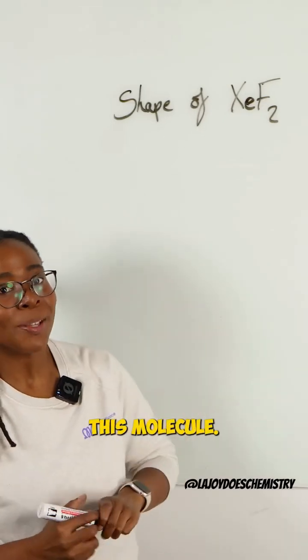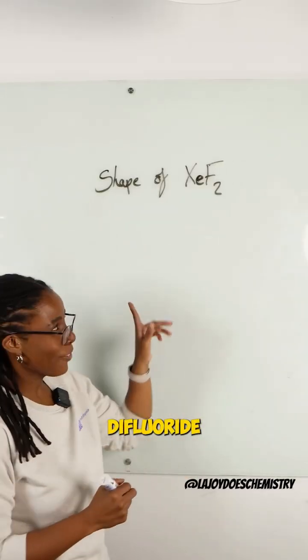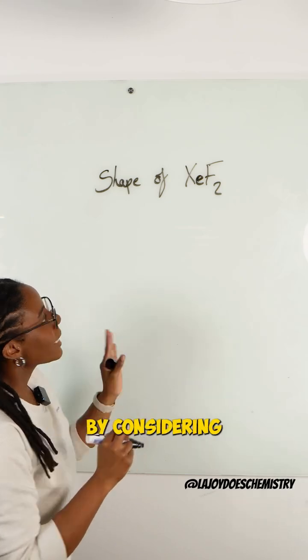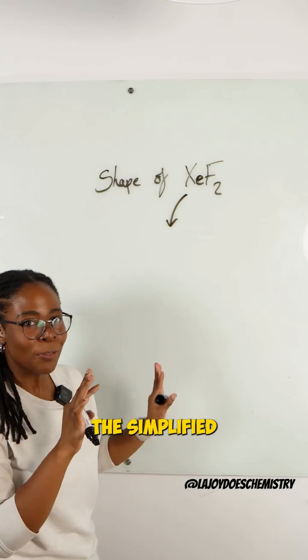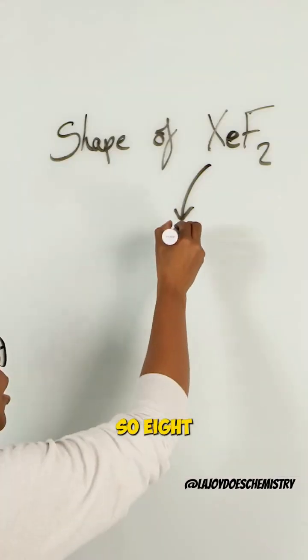Can you draw the shape of this molecule? So for xenon difluoride, we can start by considering how many electrons are in xenon's outer shell. We'll take the simplified approach and say it's in group zero, so eight.